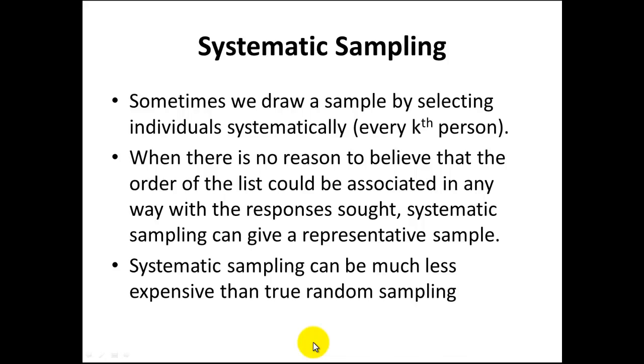Another type of sampling technique is called systematic sampling. We draw the sample by selecting individuals systematically. What that is, is we would select every kth person. Now, kth seems a little abstract, so we put that there because we could say every eighth person, every ninth machine that comes off of an assembly line, and so forth. This k here is just to represent a value that we decide is a good number and use it to select individuals or things. If there's no reason to believe that the order of the list could somehow be associated with not giving us a representative sample, then this is a reasonable way to sample.